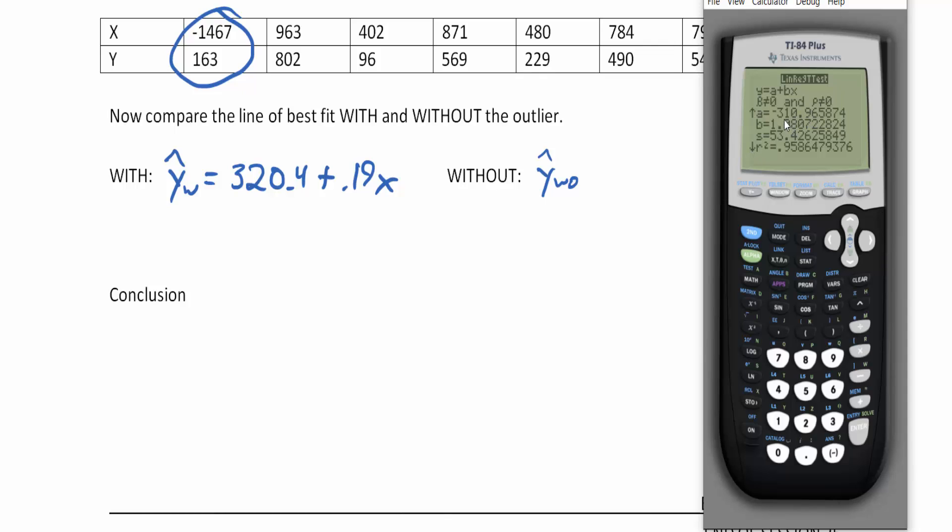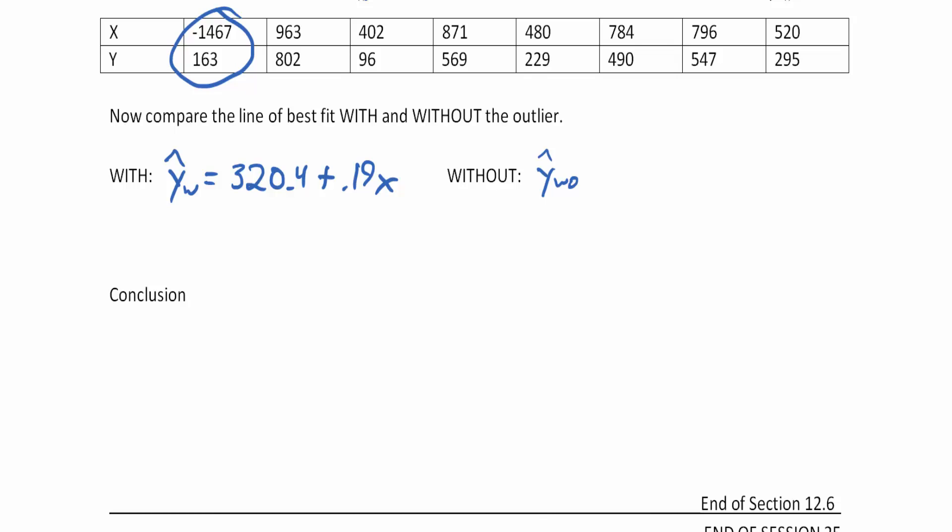I'll do that. Negative 311. And then the b is 1.08. Oh, my goodness. So it's a lot different. My first of all the y intercept going from positive to negative. And then I'm going to add to that a 1.08, which is a lot different than .19. So the conclusion is that this negative 1467 comma 163 x and y value is an influential point.